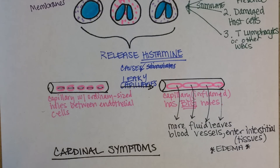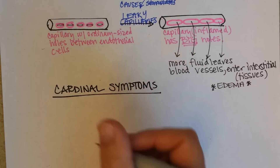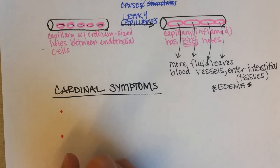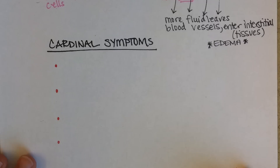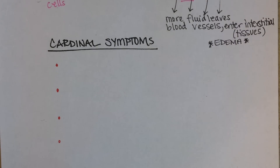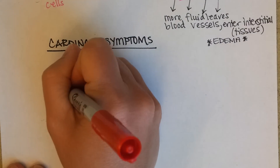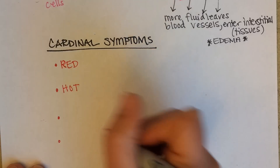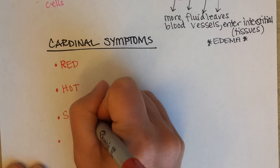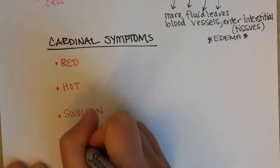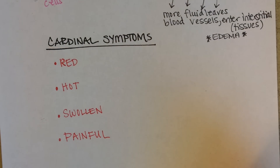Now why could this ever be a good thing? First let's look at the cardinal symptoms, each one of which can really be explained by leaky capillaries, and see why each one could potentially be good. There are four main symptoms. Think about if you have ever experienced a sprained ankle, or if you've ever hit your finger with a hammer. The area is red, it feels warmer or even hot to the touch, it will be swollen, and in all likelihood will be more painful — think of a hangnail as a good example. So what is making the area look red?